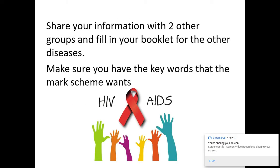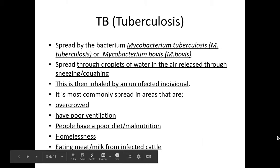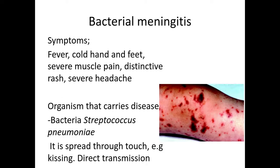The first disease is TB. This is caused by the bacteria Mycobacterium tuberculosis. The underlined parts are from the mark schemes, so pay attention to these. TB is spread through droplets of water in the air via sneezing and coughing, then inhaled by an unaffected individual. TB is most common in places that are overcrowded, have poor ventilation, where people have a poor diet or are malnourished, in cases of homelessness, or from eating milk or meat from infected cattle. It's spread through indirect contact.